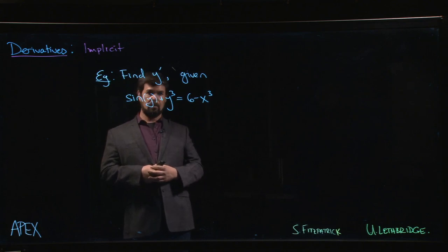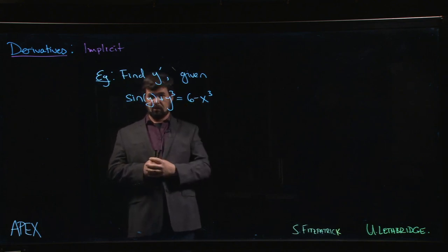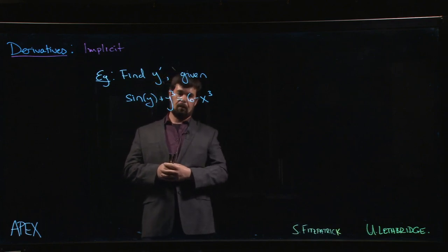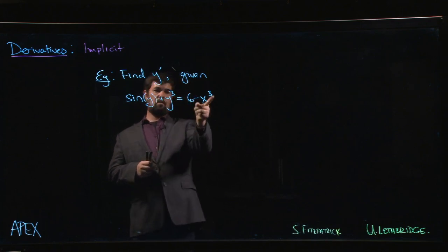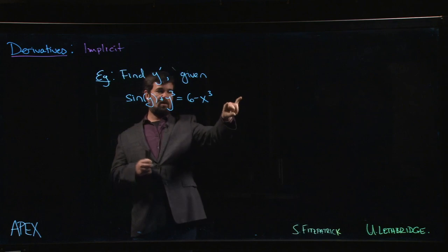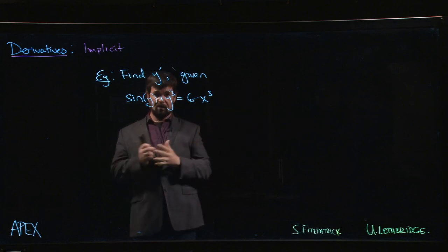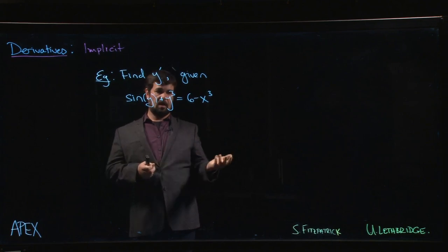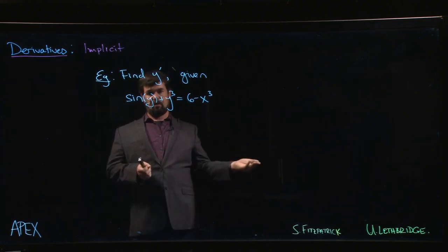The only thing you could reasonably do here is you could solve for x as a function of y. We could move the x cubed over, bring this to the other side, take cube roots, we would have x as a function of y and we could just turn the tables and proceed. Write x as a function of y and take the derivative using the chain rule.